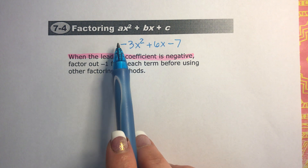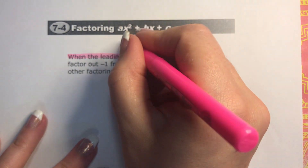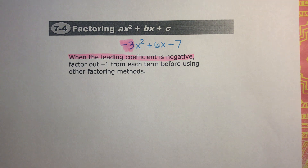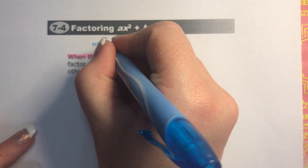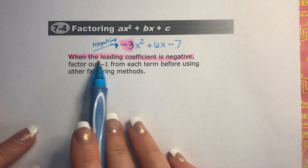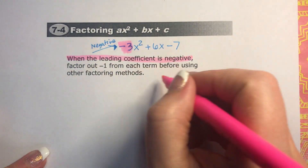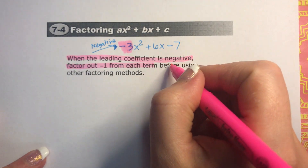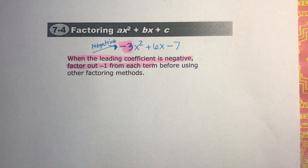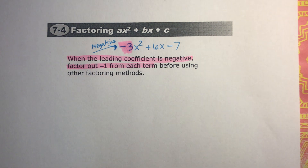So right here is the leading coefficient, which is negative 3. What this is stating is that when that leading coefficient is negative, factor out negative 1 from each term before using other factoring methods. So we factor out a negative 1 from each term. Whenever you see that negative there, you're going to immediately factor out the negative.